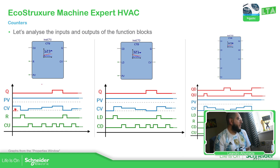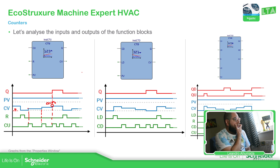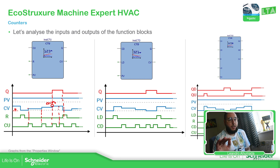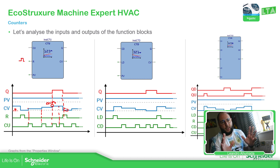So it resets the counter value. Now I have an increment — you can see it's going one up, increasing. At this point the CV is equal to the PV, that's why you have Q activated, which is the output. Then in this particular case, now I have the reset value. It doesn't increase because it reached the limit. The Q stays on until I have the R pulse to reset the counter value to zero. This is how it works basically.